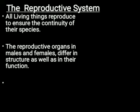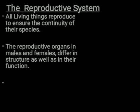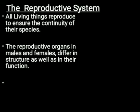All living organisms reproduce in order to ensure the continuity of their species. When the previous, older generation will die, a new generation will take their place in this world. The reproductive organs in males and females differ in structure as well as function. In humans, reproductive organs of males and females are different.